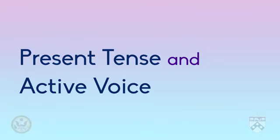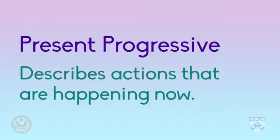Let's look at present tense first. We're going to look at present progressive in this video. We mostly use present progressive to describe actions that are happening now. We make the present progressive by using a form of the verb 'to be' and adding '-ing' onto the main verb.